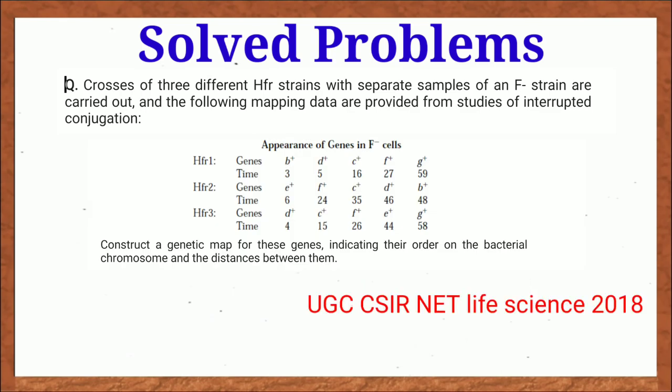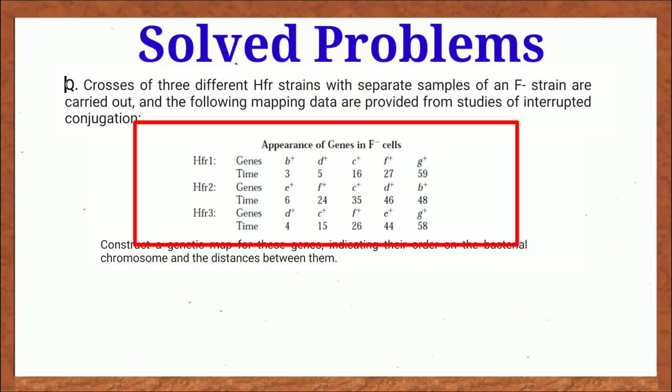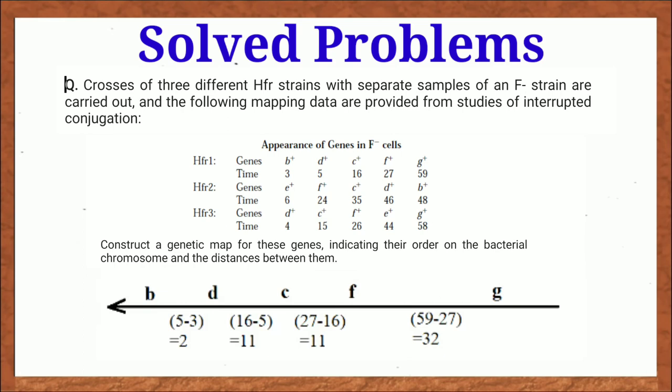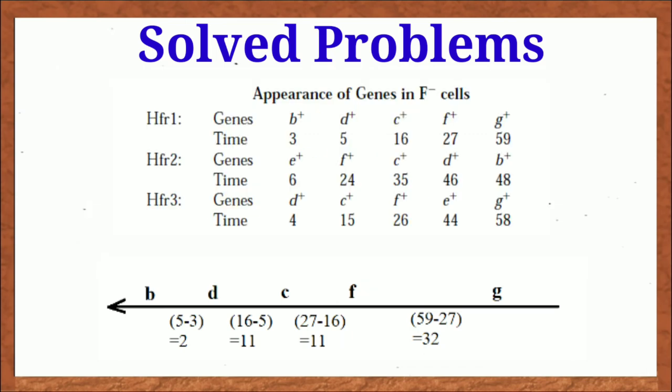And in this problem, three HFR cells are used and order and time of entry are given. From these informations, you have to construct the map and respective distance in minutes between two genes. Look carefully how I found the distance and the order of gene transfer in HFR1. It takes three minutes for the entry of gene B. That means B gene is situated three minutes away from the oriT.